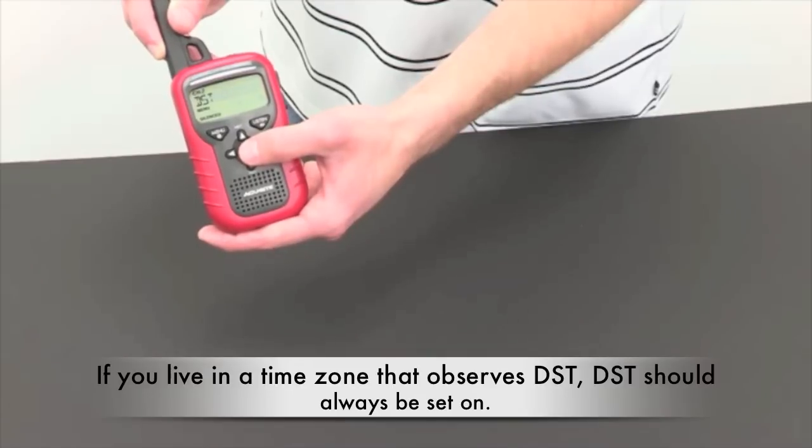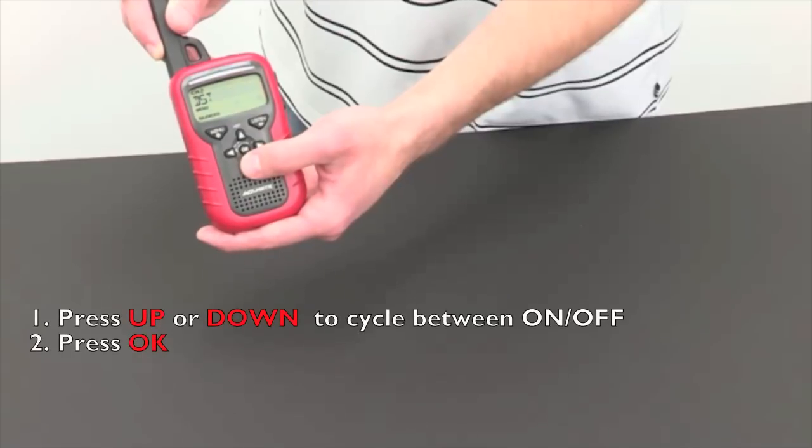Select your daylight savings time setting by pressing the up and down arrows and then ok.